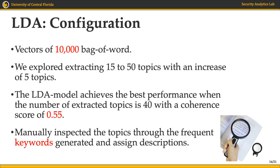That score was achieved when we used 40 topics. However, after getting the keywords from topic modeling, we manually inspected the resulting topics and assigned descriptions for them. Since some topics were related to each other, we merged them together, resulting in 23 final topics.